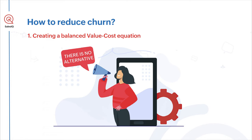Balancing the value-cost equation — there is no alternative. You have to provide the best value to your customers. Your product must be good, offer features your users need, be bug-free, and the UI shouldn't be clunky. You cannot compromise on any of them and expect customers to stay with you. We are assuming you offer an excellent competitive product and will discuss what else you can do to decrease churn.